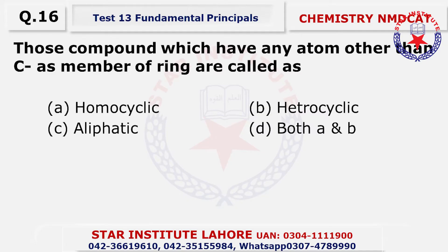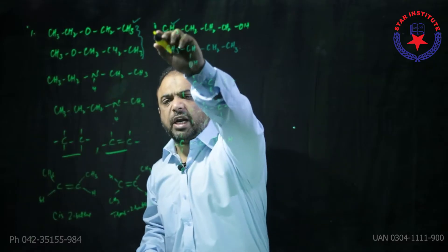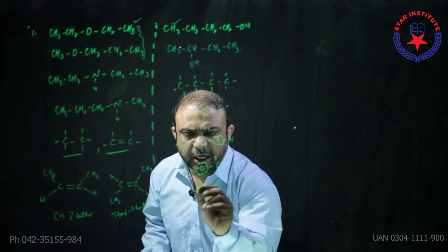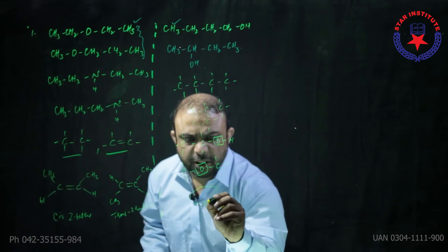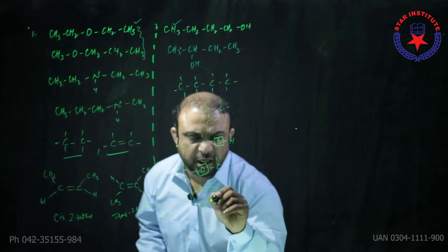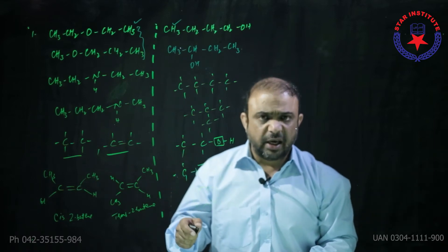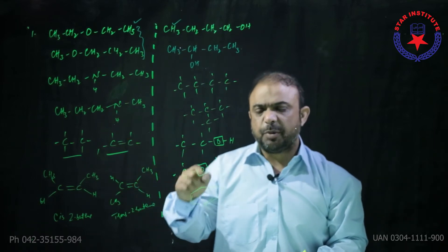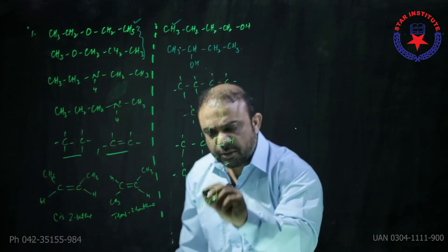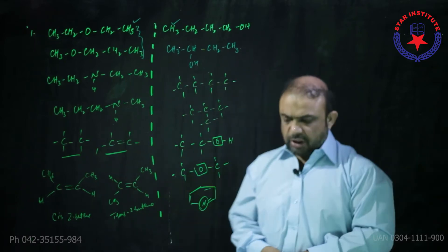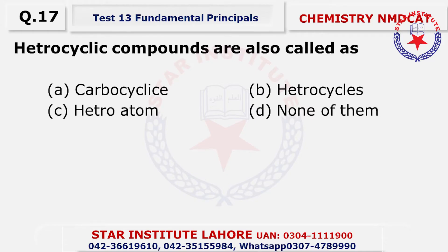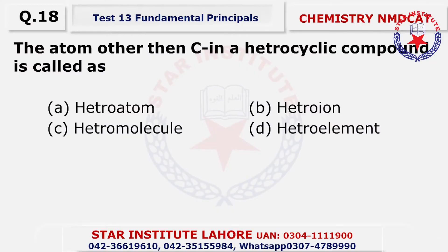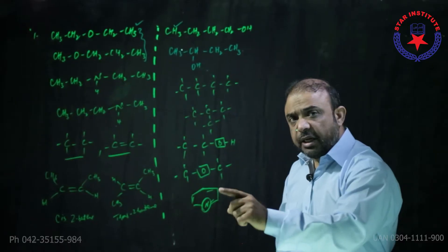Question number sixteen: Those compounds which have any atom other than carbon as a member of the ring — if any atom other than carbon comes inside the ring, these will be called heterocyclic compounds. Pyridine is the example — you call this heterocyclic. These can also be called heterocycles, and the atom making them heterocyclic can be called a hetero atom. Question number seventeen: Heterocyclic compounds are also called as heterocycles. Question number eighteen: The atom other than carbon is called a hetero atom.